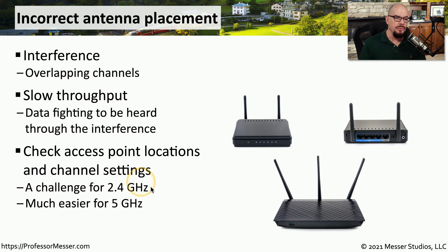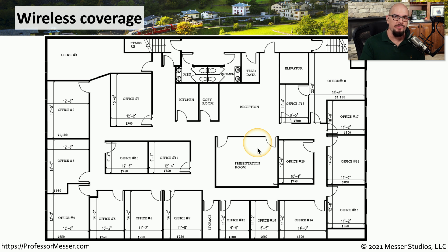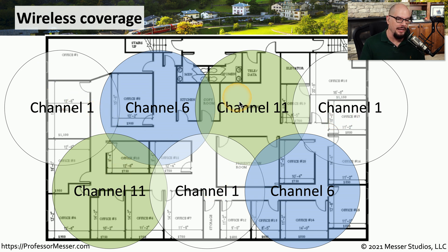This can be a challenge at 2.4 gigahertz because there is only so much frequency available. At 5 gigahertz, there are many more frequencies available, so it may be easier to find an open channel. If you had a floor of a building with seven 2.4 gigahertz access points, you would need to place them so they don't overlap. You should plan on implementing channel 1, channel 6, and channel 11, because those three channels do not overlap with each other in 2.4 gigahertz. This ensures there will be no interference between any of these access points and you'll have the fastest throughput possible.